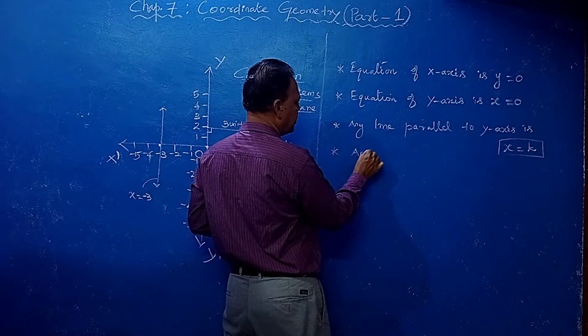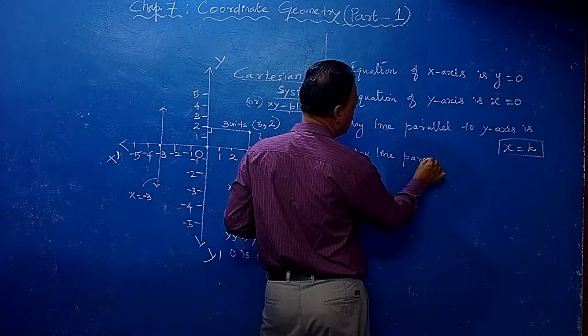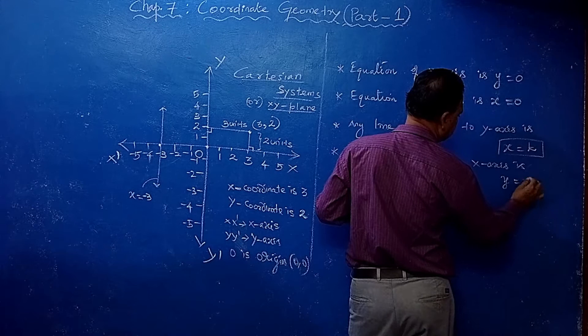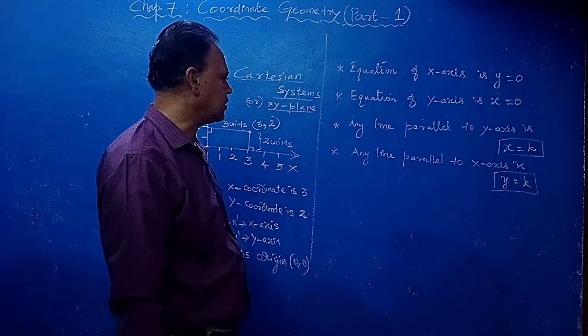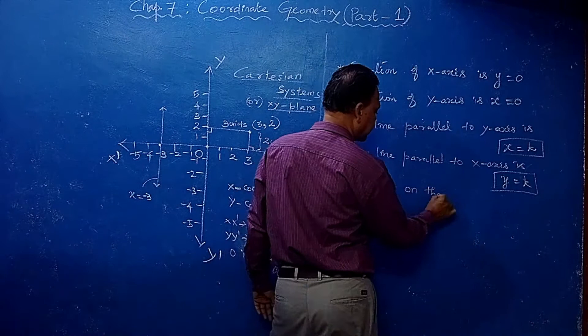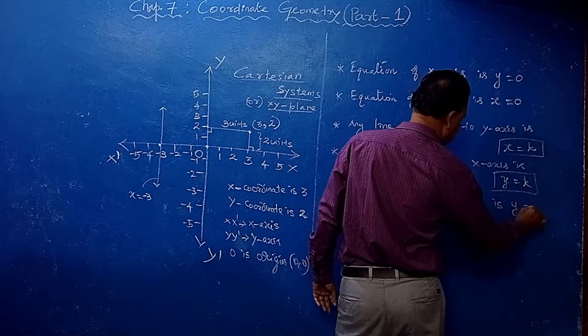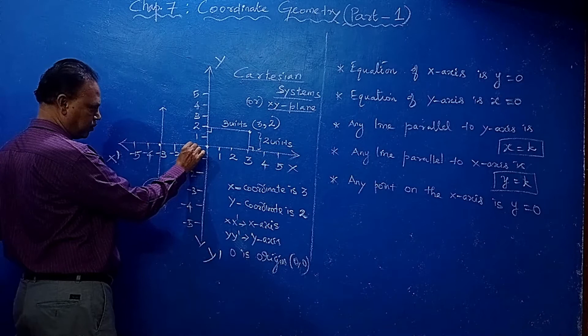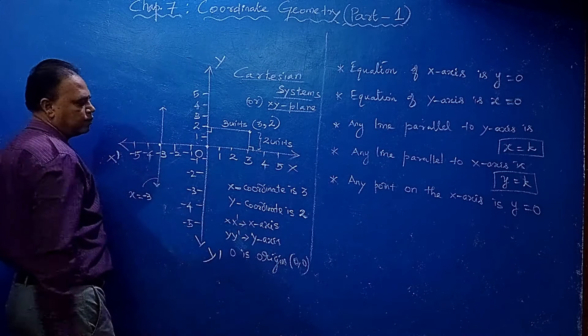Similarly, any line parallel to the x-axis has equation y equal to k, where k is a real number. Any point on the x-axis has y equal to 0. So you take any point on the x-axis - its y-coordinate is 0.